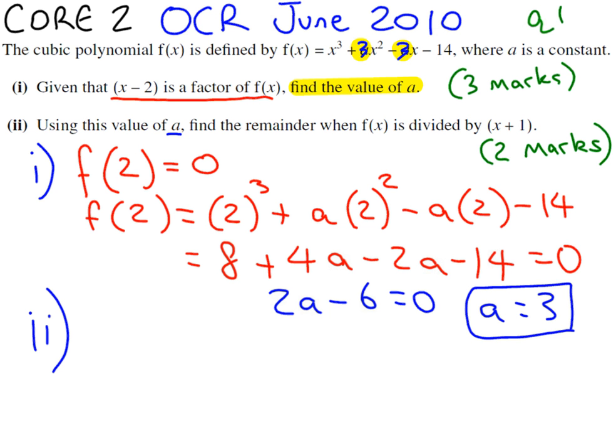Find the remainder when f(x) is divided by (x + 1). The remainder theorem says that if we find f(-1), because it's plus 1 here, then the answer we get is the remainder.